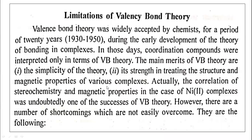Valence bond theory also gives the correlation of stereochemistry and magnetic properties, for example in the case of nickel(II) complexes. But even though valence bond theory explains so many things, there are a number of shortcomings, limitations, and drawbacks in the valence bond theory.